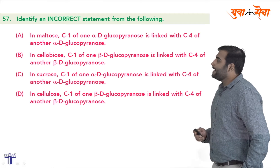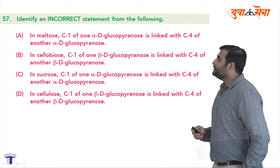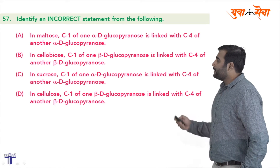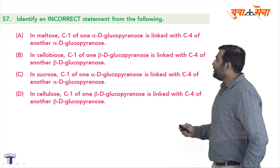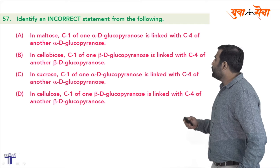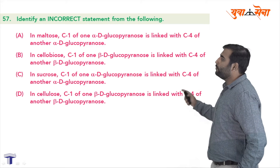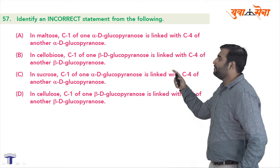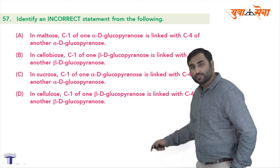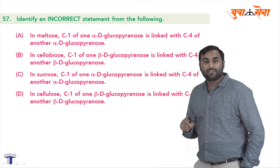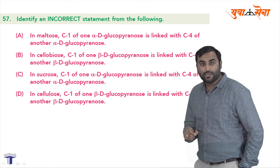The first statement A says that in maltose, carbon 1 of one alpha-D-glucopyranose is linked with carbon 4 of another alpha-D-glucopyranose. So quickly ham log iska structure banayenge maltose ka.